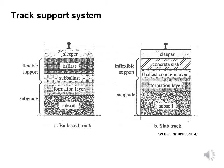Now I'm going to provide an introduction to the track system, comparing ballasted track with slab track. In terms of ballasted track, we see a subsoil layer, a formation layer forming a subgrade, then flexible support made up of sub-ballast, then the sleeper with the rail connected to it. Slab track is often used where we want to maintain the precise position of the track — for example, in a tunnel. In slab track, above the subgrade we have a ballast concrete layer, a typically reinforced concrete slab, and then possibly sleepers with rails connected to those sleepers.